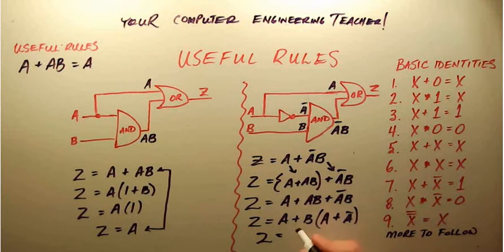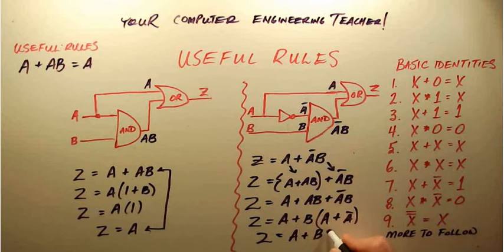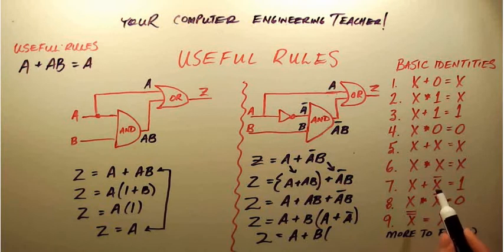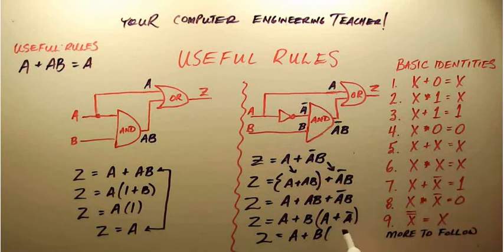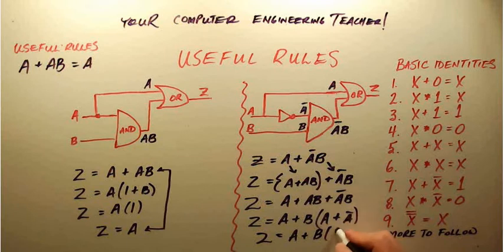And what I end up with is A + B times (A + A'). This is the same as identity number seven: X + X' is equal to 1. A + A' is equal to 1.